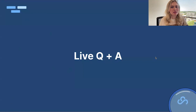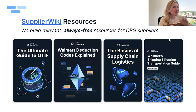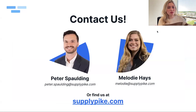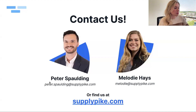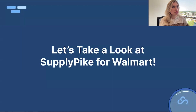There are some great resources on Supplier Wiki that we covered today: the Ultimate Guide to OTIF, the Deduction Codes Explained guide, and a packaging and labeling cheat sheet for Walmart. Feel free to email us with any questions, or visit supplypike.com — in the top right corner there's a meeting link where you can book a personal demo or put time on our calendar to get questions answered.